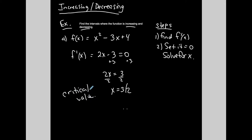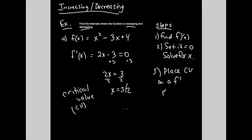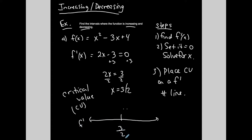Step 3: place your critical values — I'll call them CVs — on what I call an f prime number line. I'm going to put a number line here, label it f prime, and place the critical value below the number line. Next, I'm going to choose test points along this interval.